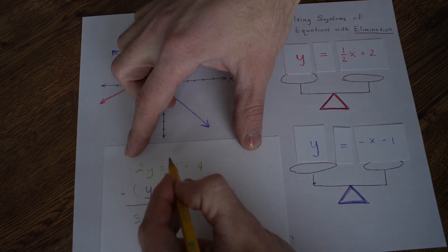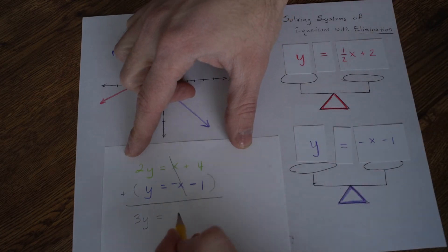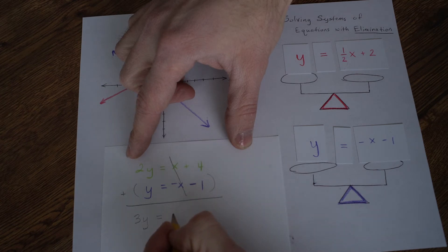x plus a negative x, that's 0x. It goes away. That's why we call it elimination, because we just eliminated the x values.